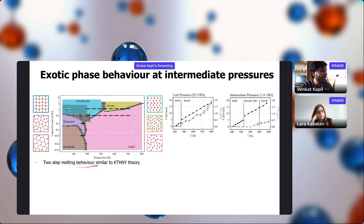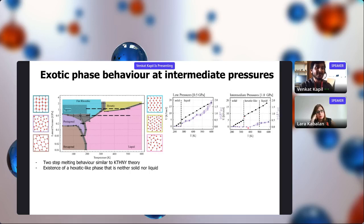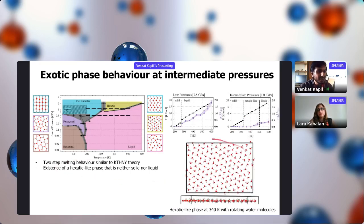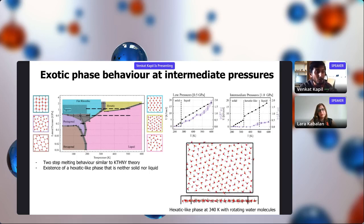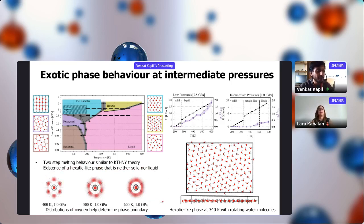This two-step melting behavior is similar to KTHNY theory, the theory for phase transitions in 2D materials. The intermediate phase changes continuously to a liquid but doesn't diffuse — it has properties of a hexatic phase. This phase has disorder, with oxygen atoms not diffusing but rotating. It is intermediate between solid and liquid, and can be identified as a hexatic phase: it lacks translational order but has long-range orientational order.